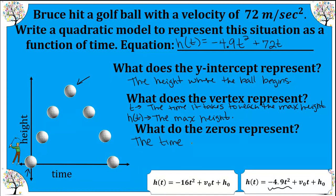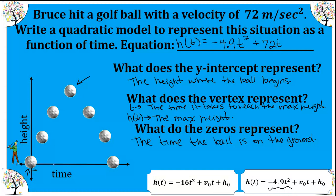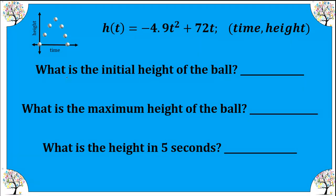Our zeros represent the time the ball is on the ground. The ball starts on the ground at zero seconds, then it's hit, and it lands back at zero meters. So both zeros are relevant — one will be zero. The initial height is zero meters; it starts on the ground. To get the maximum height, we need the number of seconds it takes, so we're going to use negative b over 2a.